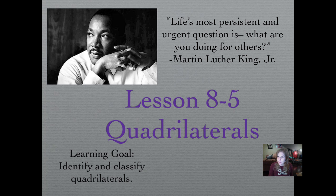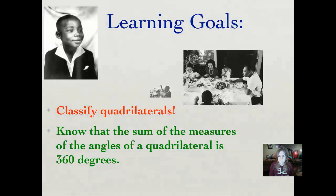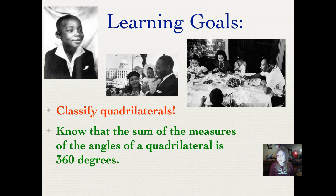Our learning goal tonight is to identify and classify quadrilaterals. We are going to learn to classify quadrilaterals tonight and you also need to know that the sum of the measures of the angles of a quadrilateral is 360 degrees. Just like a triangle, the sum of the measures of the angles is 180 - you multiply that times 2 and you get 360 degrees for a quadrilateral.